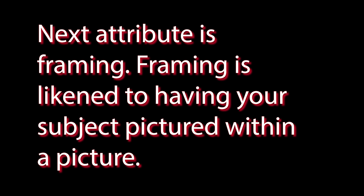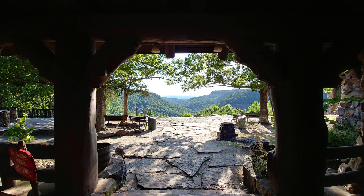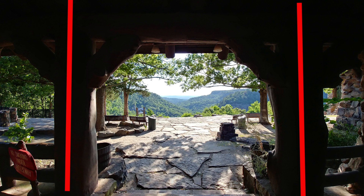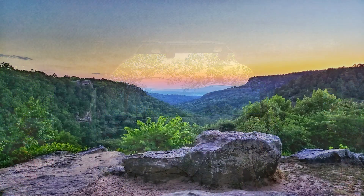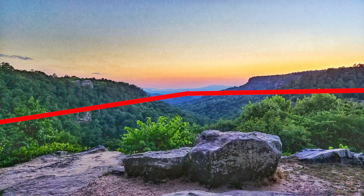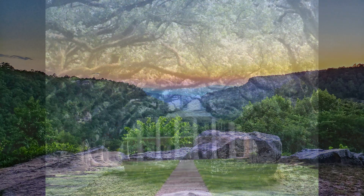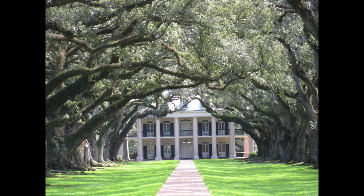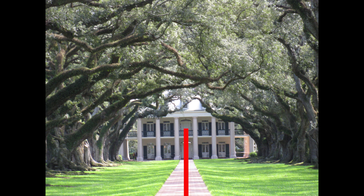Framing is a technique used to make the subject the strongest part of the picture — it's like having a picture within a picture. Here at Pettigrew State Park, I'm standing in the breezeway of the lodge and using the pillars to frame the mountains in the background, giving me context as to where I am. Here's a picture of the Oak Alley antebellum mansion, shot with a point-and-shoot camera many years ago. You've got strong framing with the trees, and the trees also form a leading line as well as a sidewalk. Just a really great picture.